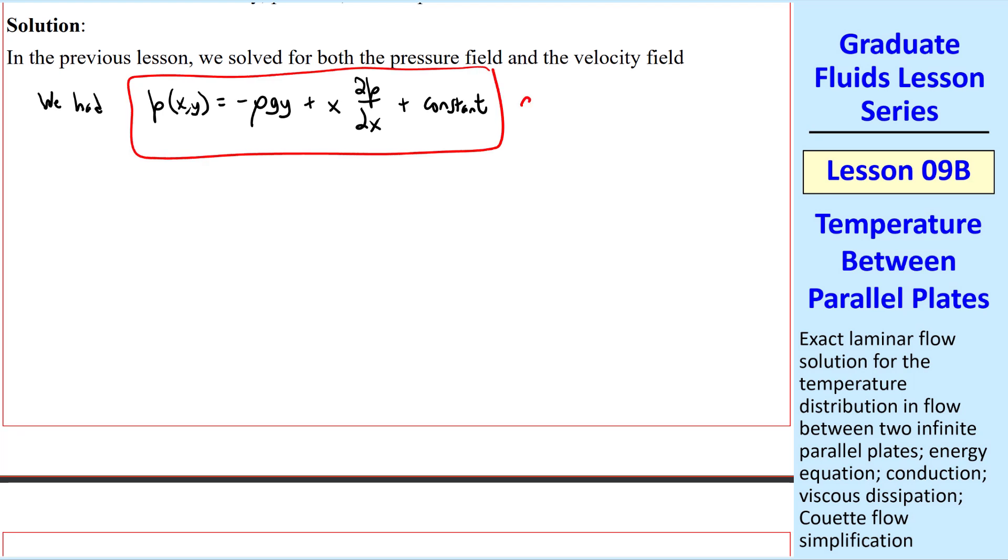And for u, which is only a function of y, we had y u over 2b minus y over 2mu del P del x times the quantity 2b minus y. We called this equation 4.